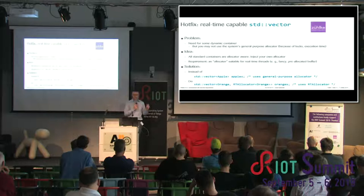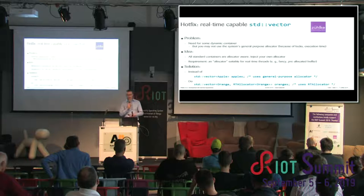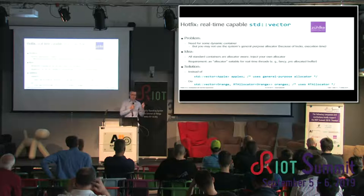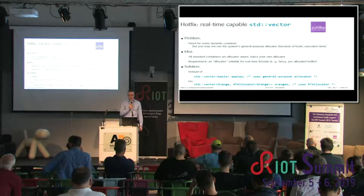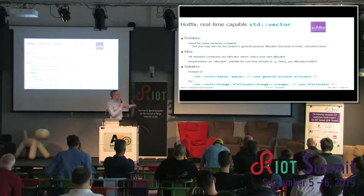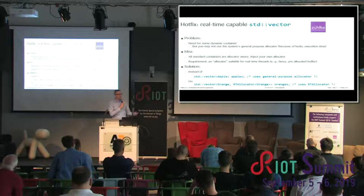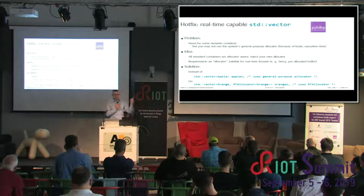Another example is a real-time capable std::vector. The problem is we need a dynamic container but cannot use the system's general-purpose allocator due to locks or unbounded execution time. The idea is that all standard containers are allocator-aware — you can inject your own allocator. The requirement is an allocator suitable for real-time threads, such as a pre-allocated buffer or monotonic buffer. The solution is to use the second template parameter of std::vector to insert a real-time allocator, so every memory call uses this real-time capable allocator. This pattern applies to every other container in the standard library and to strings as well.